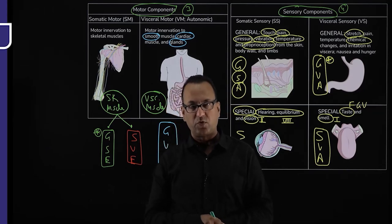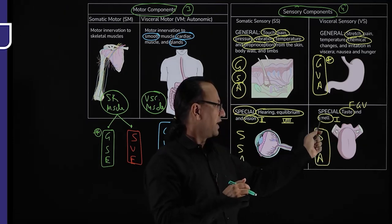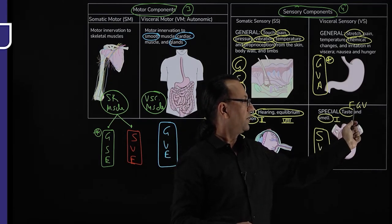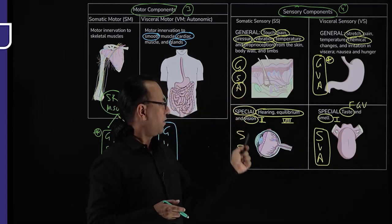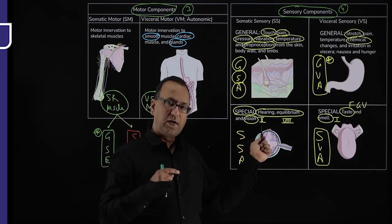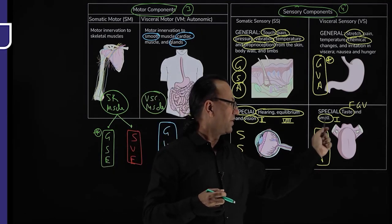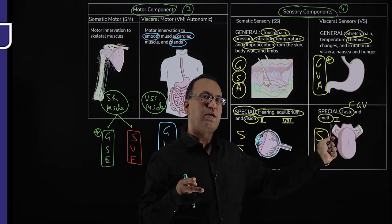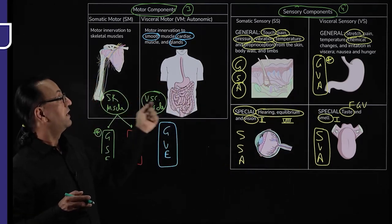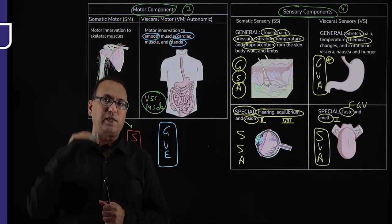When discussing brainstem nuclei, the olfactory nerve (CN1) has no brainstem nucleus since it belongs to the telencephalon, and the optic nerve (CN2) has no brainstem nucleus since it belongs to the diencephalon. So under SVA, only the facial, glossopharyngeal, and vagus nerves are considered. Under SSA, only the eighth nerve vestibulocochlear nucleus is discussed. We will now make two tables: one for neural columns and one for brainstem nuclei.